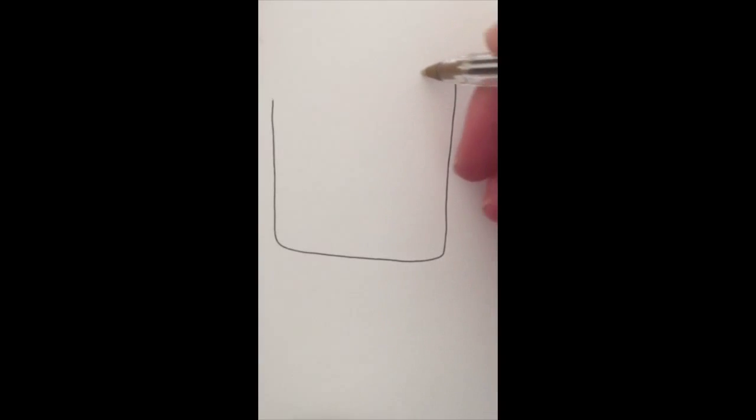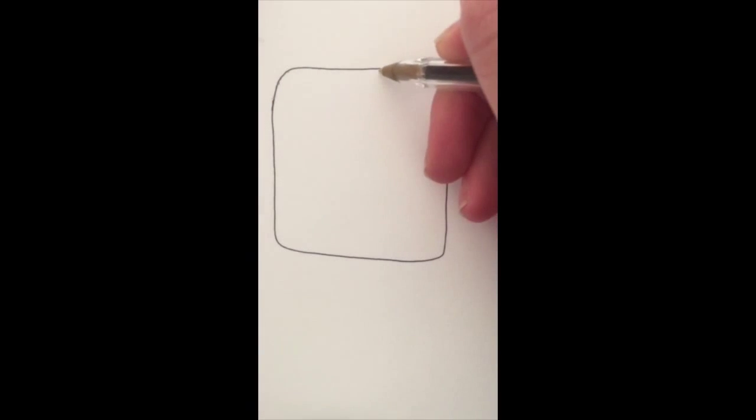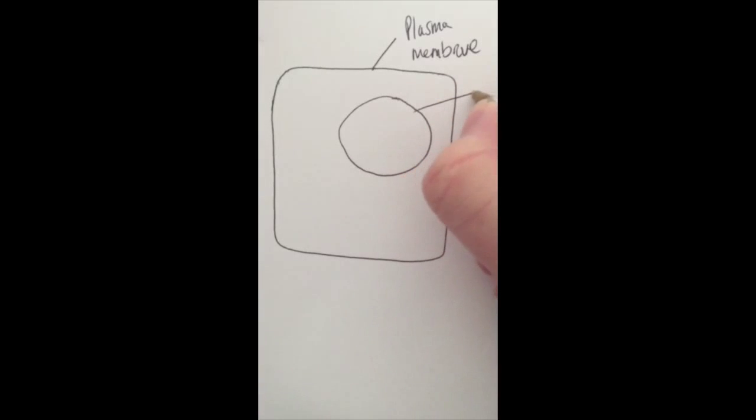So we're going to start by drawing a cell. That is the cell surface membrane or the plasma membrane. And inside, I'm going to draw a nucleus. That, of course, is the nuclear envelope. I've just drawn it as one line, but it's a double nuclear envelope. You can look more at the details of cell structure if you have a look at David Opiku's video.